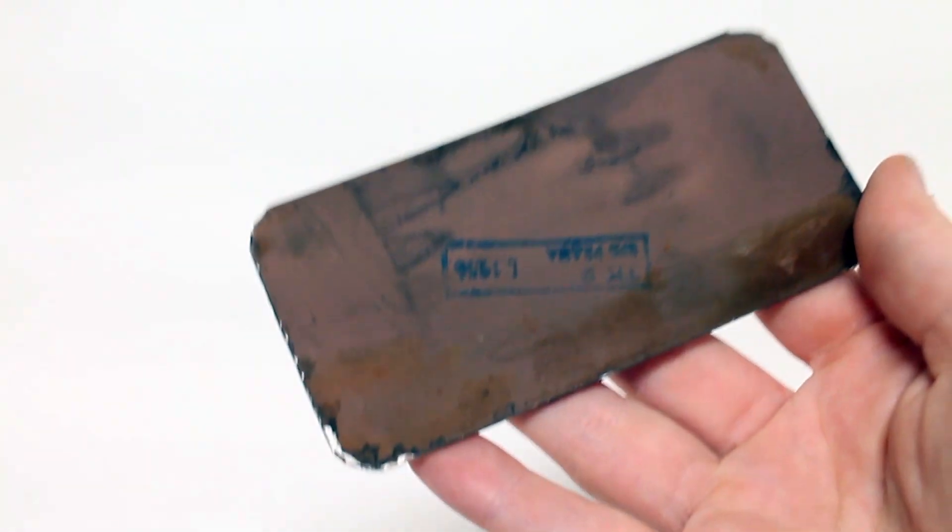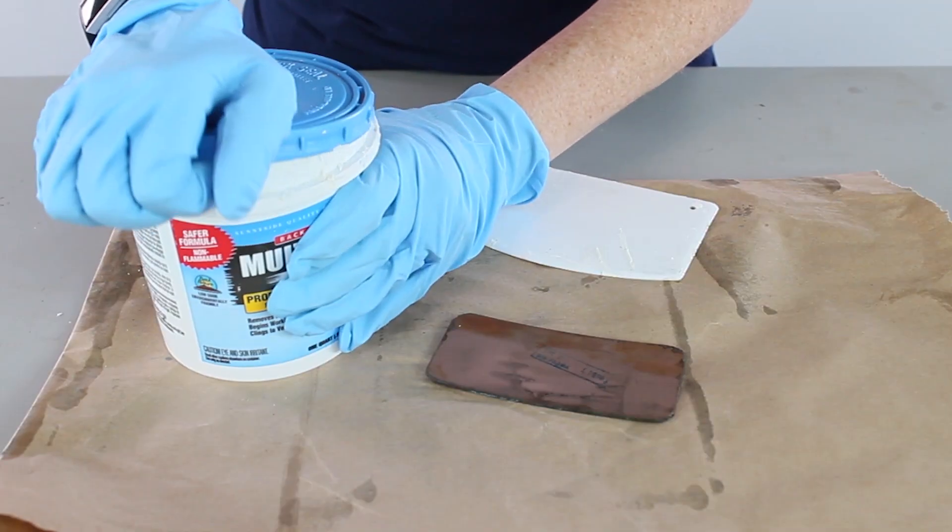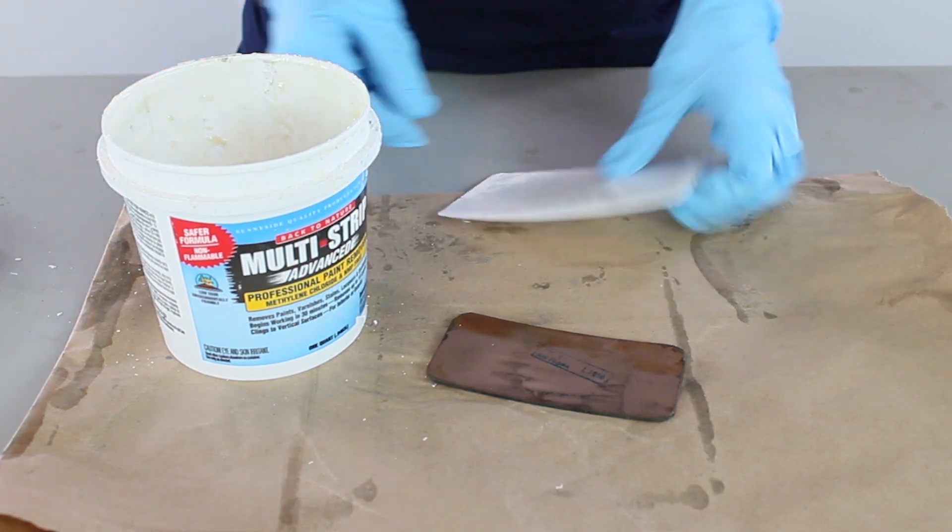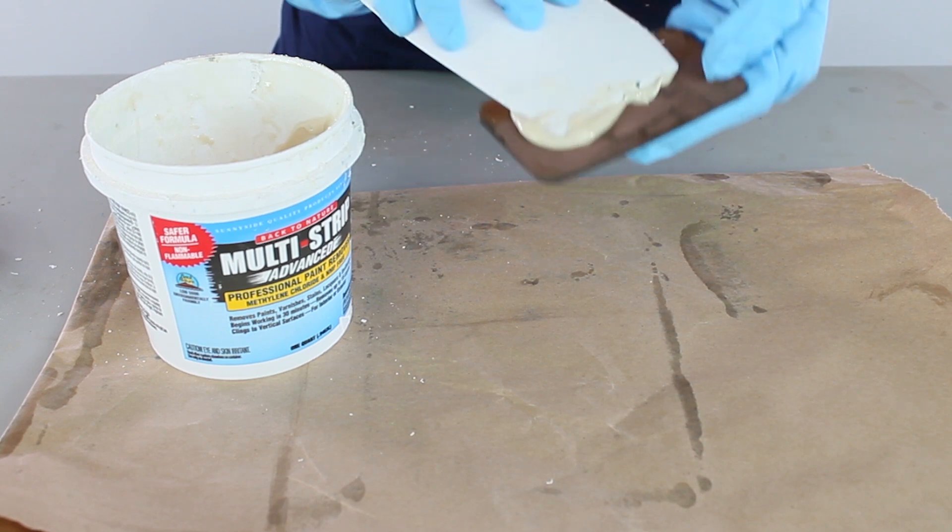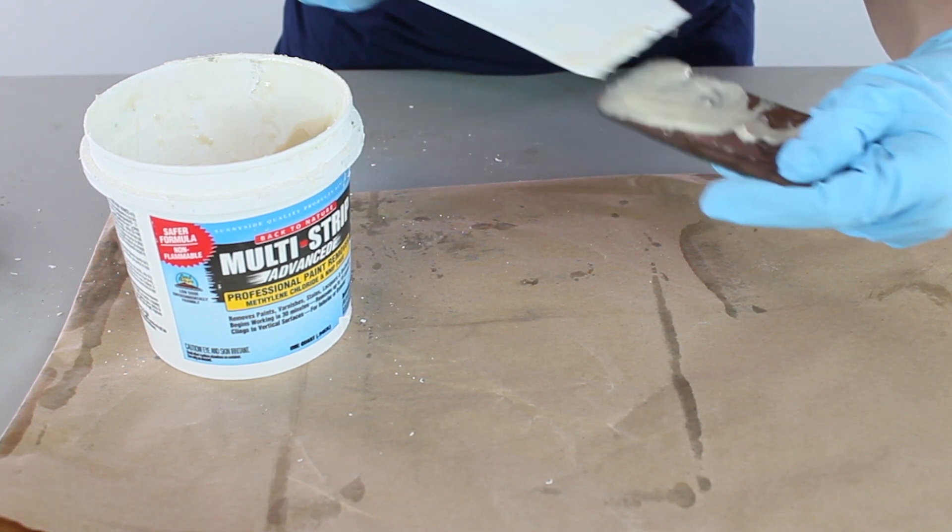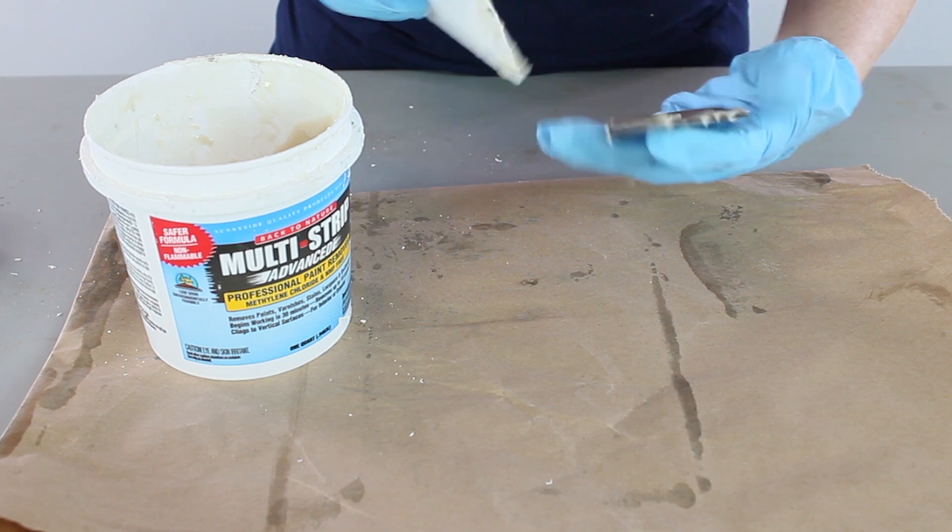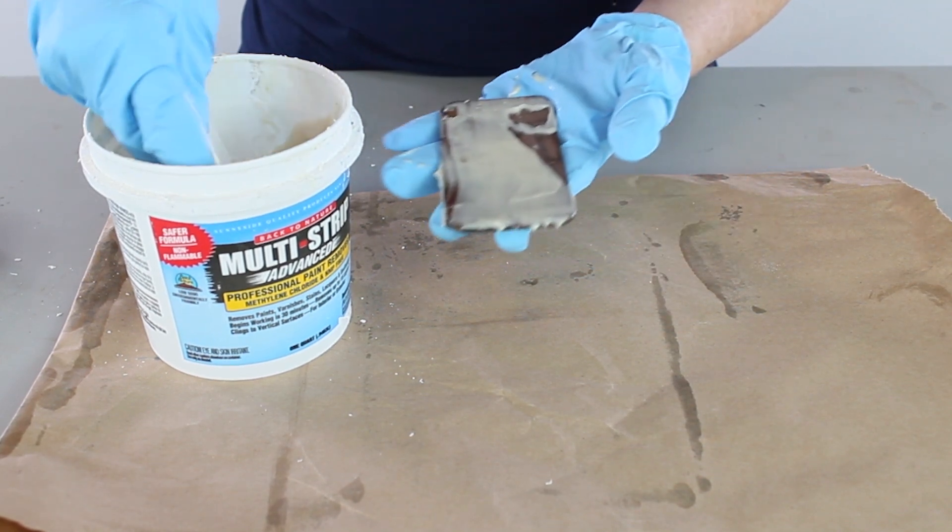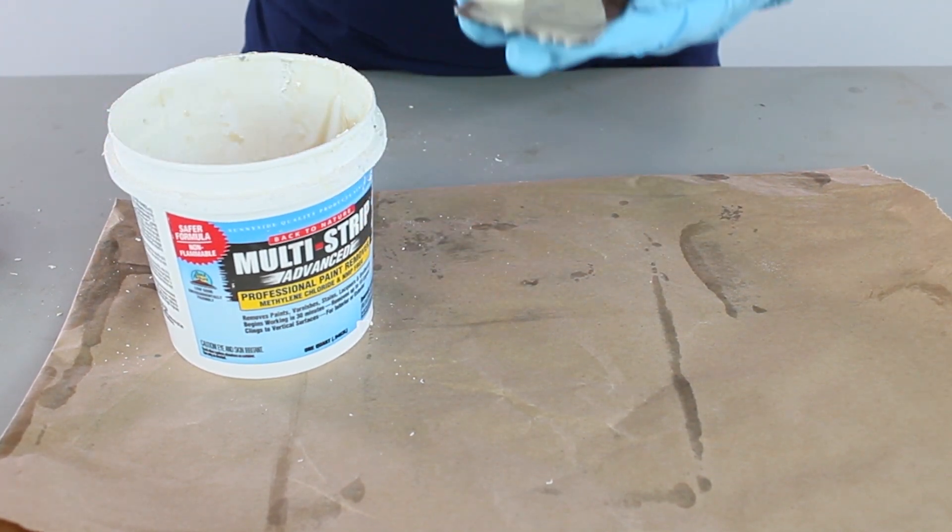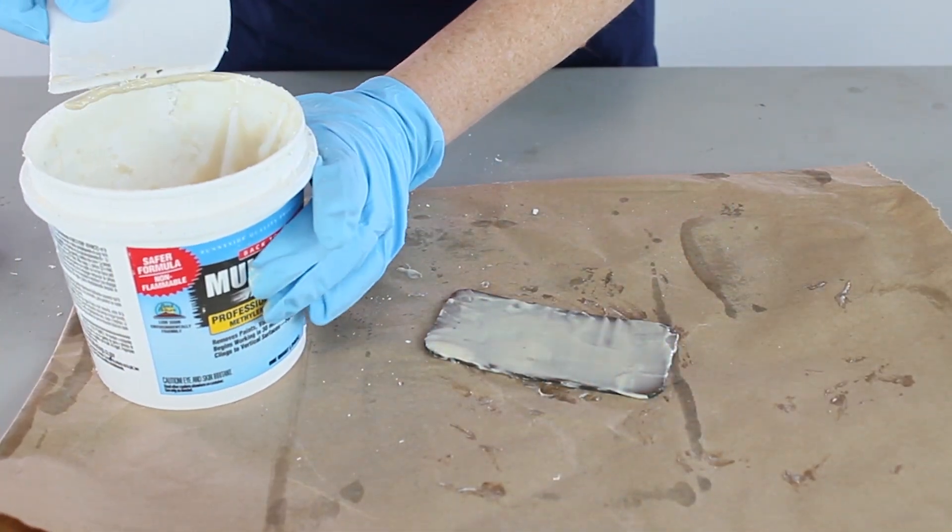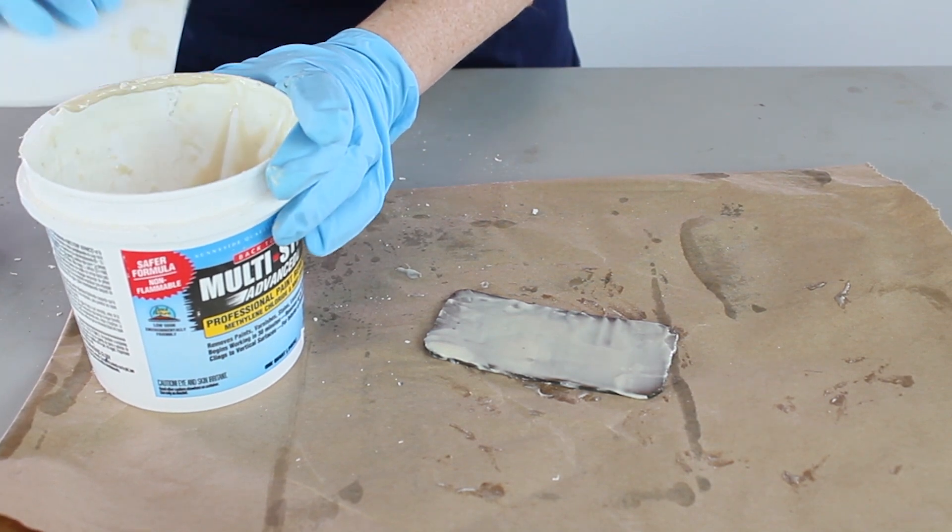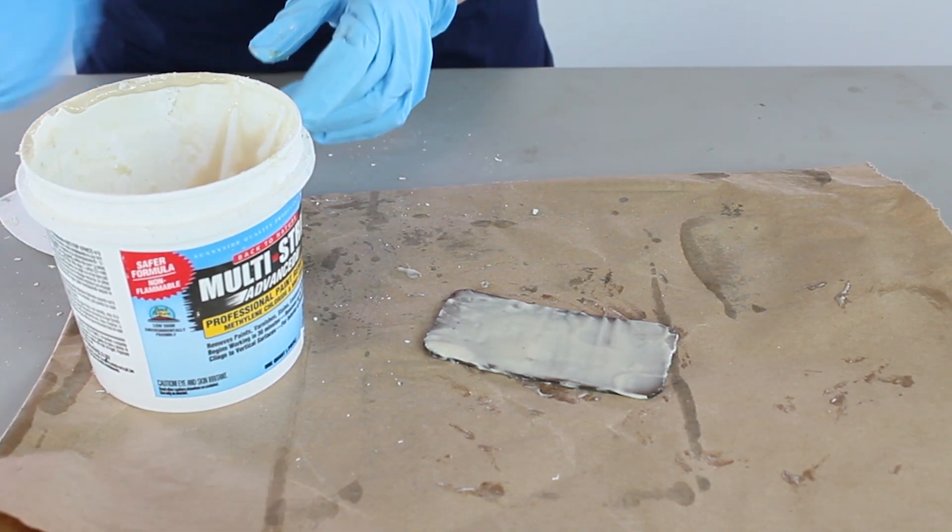Our project today is resilvering an old mirror and so we need to first remove the original mirror layer and that starts with removing the backing paint. For that we're going to be using our multi-strip and a paint scraper. I'll include links of all of the products in the description box below but you can see here I'm just applying a pretty even layer of the multi-strip. It's not essential that it's exactly even but you want to get a relatively even layer and then let that sit on the surface. The amount of time it needs really depends on the paint.